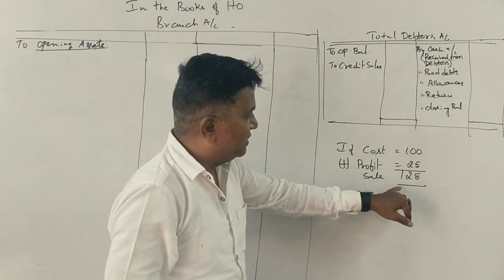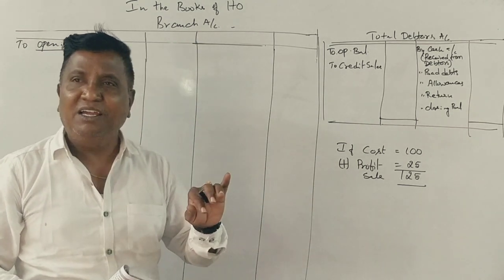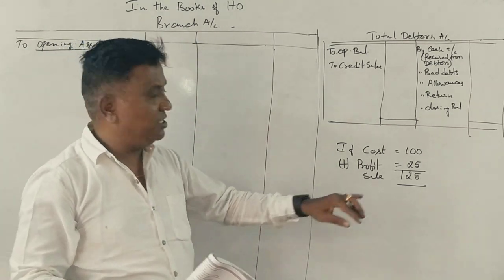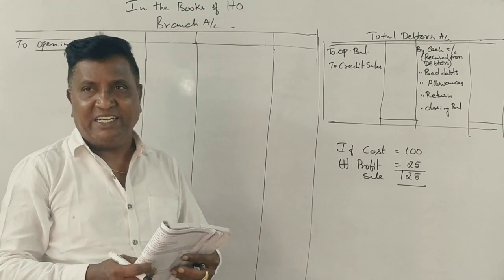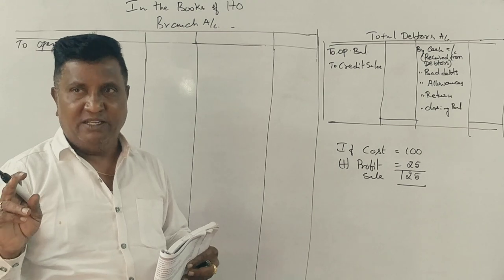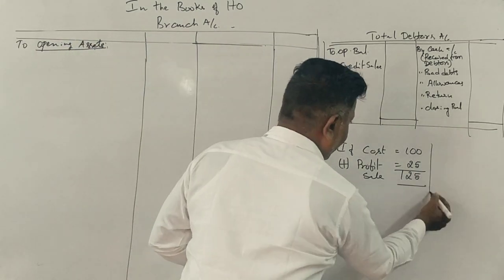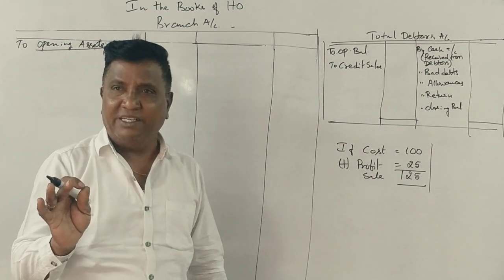If we sell at the selling price, the profit will be 25 rupees. Correct? If we sell the price of the product, then we calculate the profit.